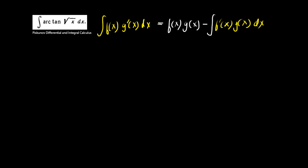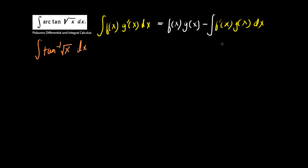This is the basic technique we are going to use. But as you can see, this involves a product of two functions. You might not see two functions here — there's only one, the tangent inverse of the square root of x. Well, not quite, because I can write this as the integral of 1 times the tangent inverse of the square root of x.